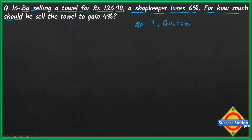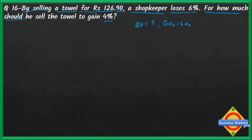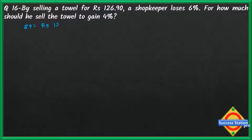Relate this to the previous question. In the second part there, we had gain percent and selling price given — here gain percent is given and selling price is asked. So we will use the same approach: first find cost price from part one. Given: selling price is equal to rupees 126.90, and loss percent is 6%.